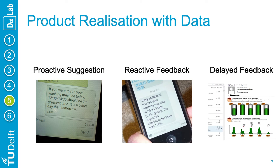On the left-hand side, we can see a proactive text message example suggesting to do the laundry within a two-hour time slot predicted to be best for solar energy consumption. This message was sent in the morning or in the evening before, depending on participant preferences. This feature was a clear success among participants, as it provided information in advance through a suggestion, giving them the ability to follow it or to completely ignore the message.